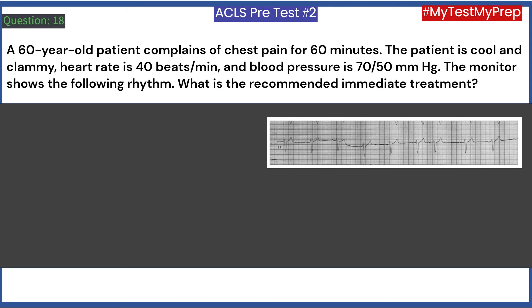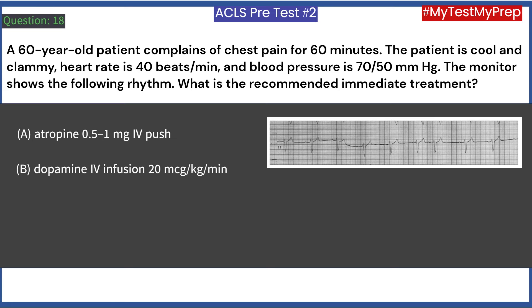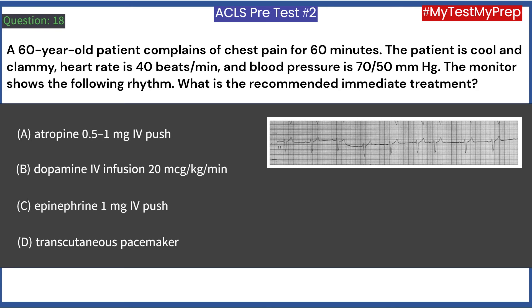A 60-year-old patient complains of chest pain for 60 minutes. The patient is cool and clammy, heart rate is 40 beats/min, and blood pressure is 70/50 mmHg. The monitor shows the following rhythm. What is the recommended immediate treatment? A. Atropine 0.5 to 1 mg push. B. Dopamine infusion 20 mcg/kg/min. C. Epinephrine 1 mg push. D. Transcutaneous pacemaker. Answer: A. The rhythm shown is sinus bradycardia.